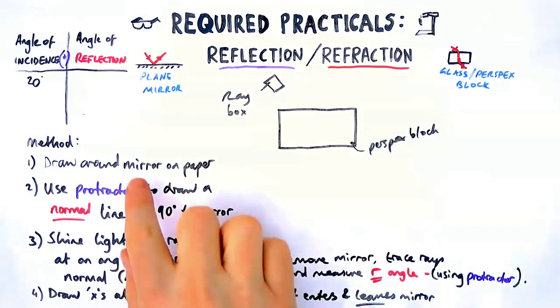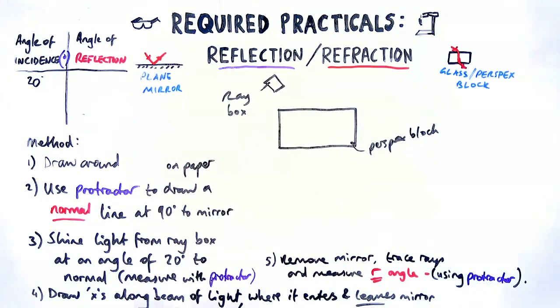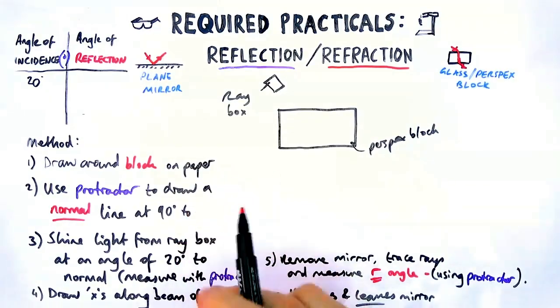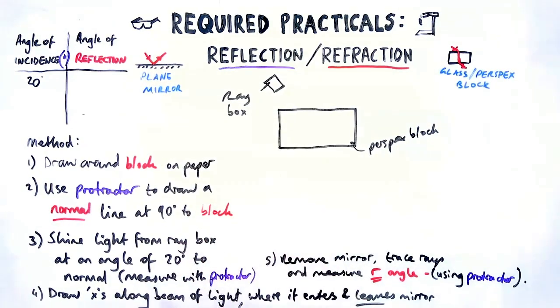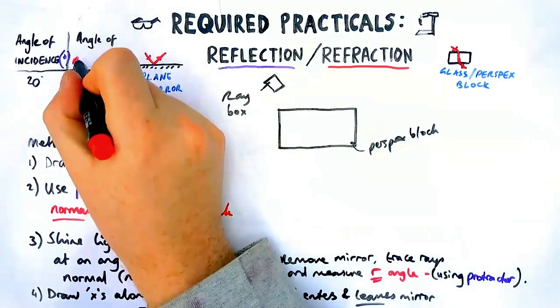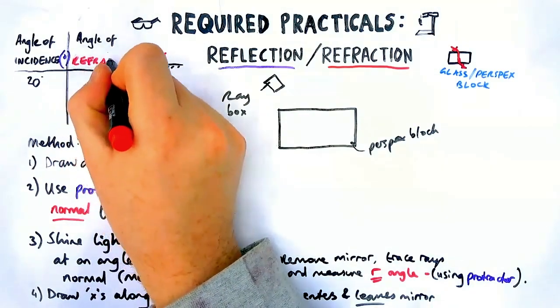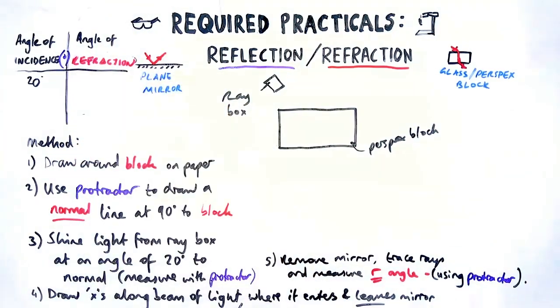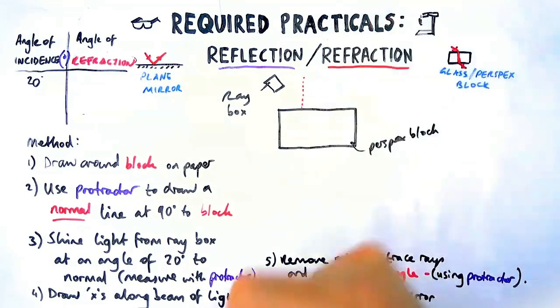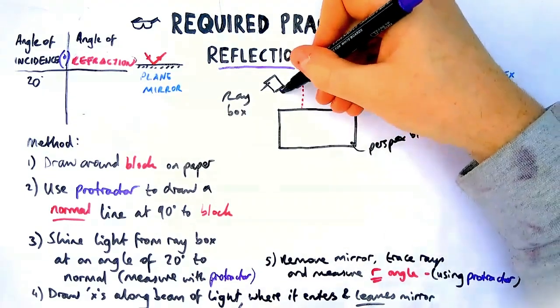We're still going to do a normal line. So let's kind of draw that on our diagram. And we are going to still shine the ray box in at an angle of 20 degrees to that normal. It doesn't have to be 20. It could be 10. It could be 40. Often if they give you results, then you kind of go with those. So let's draw my normal on 90 degrees with my protractor. Then the ray goes in, you measure the angle of incidence, and you shine the ray box in at that angle.